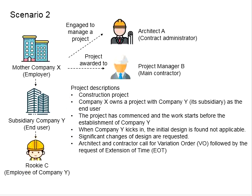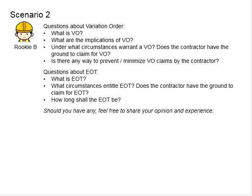Rookie C, an employee of Company Y, was given the responsibility to rectify this. He looked into the entire design and realized significant changes were required. He then requested to the architects and contractors, and they called for variation orders. This means Company X would have to pay for the cost of rectification and redesign. They also followed up with requests for extension of time, EOT. Now the questions arise.